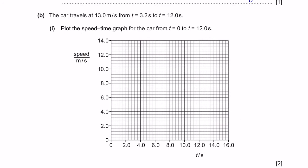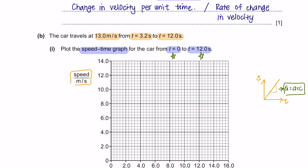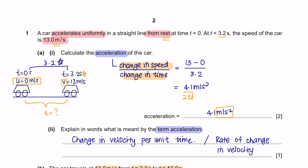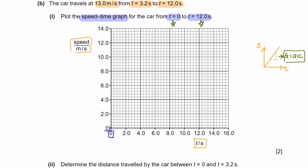Question B: the car travels at 13 meters per second from t=3.2 seconds to t=12 seconds. Part 1: plot the speed-time graph for the car from t=0 to t=12 seconds. This is a graph of speed versus time. The gradient of a speed-time graph tells you its acceleration. At time 0, the velocity was 0 meters per second, so at x=0, the speed is also 0.